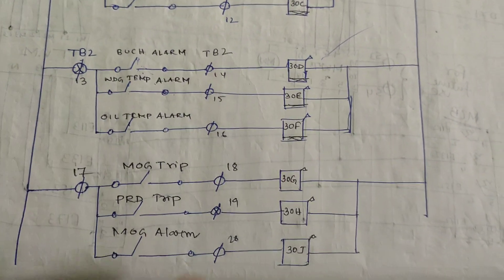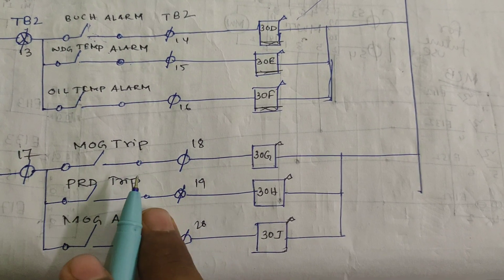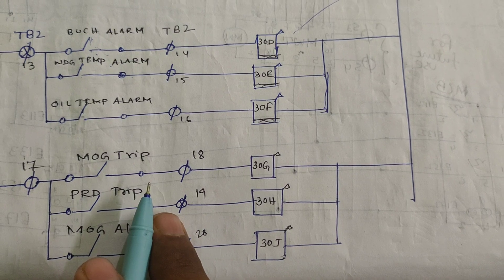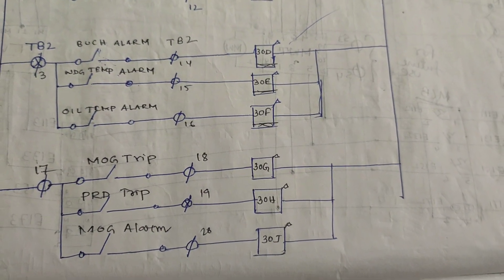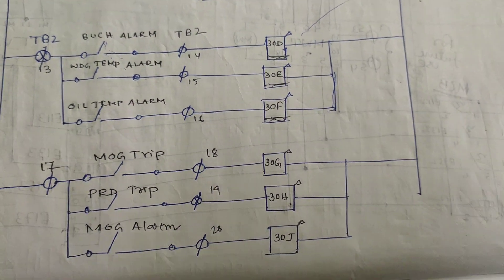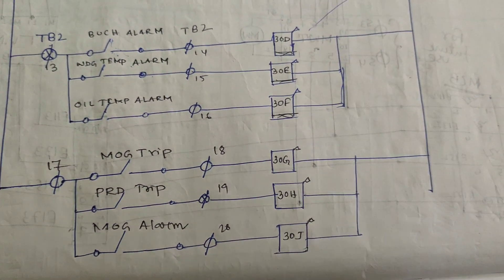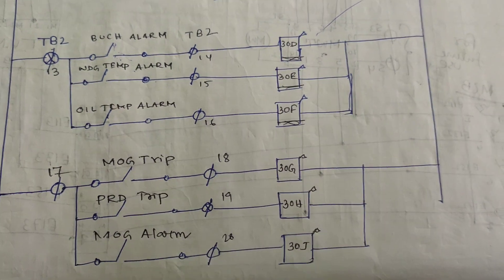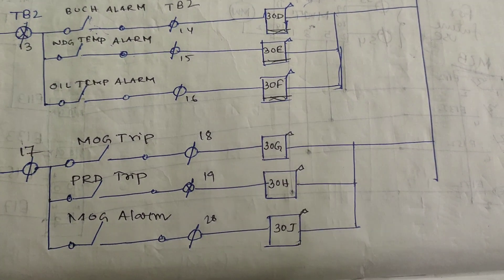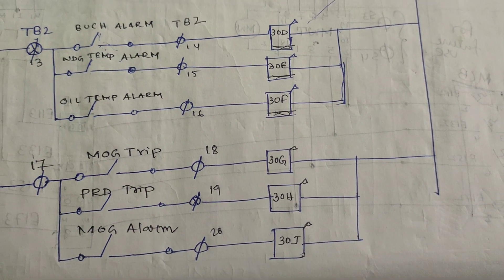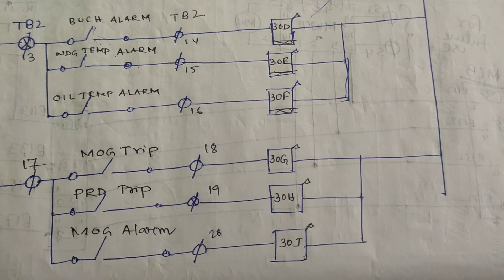The MOG — Magnetic Oil Gauge — is used in the conservator for oil level indication in the OLTC (On Load Tap Changer). If the oil in the OLTC reduces, the MOG level drops. If not observed, first the MOG alarm activates, then the MOG trip operates. This depends on the volume of oil — when oil reaches zero, MOG trip may occur because tapping cannot be changed without oil.